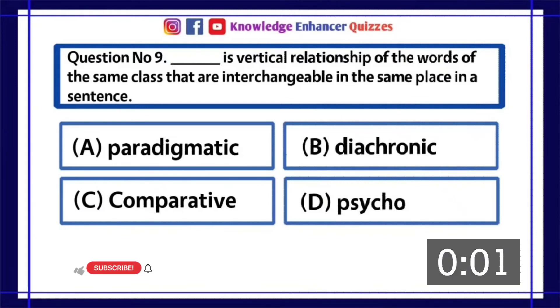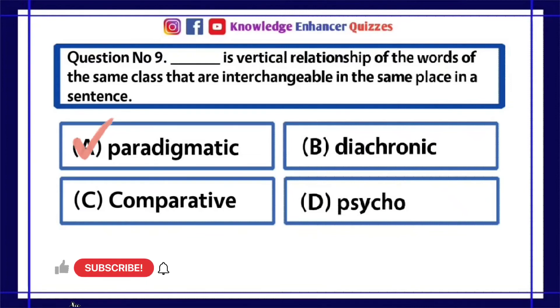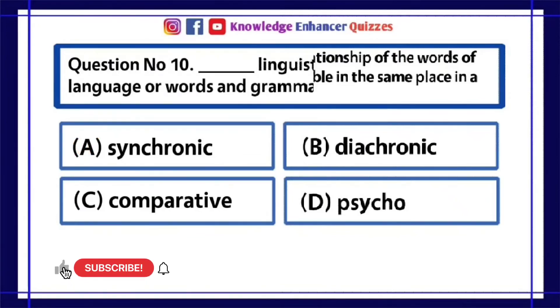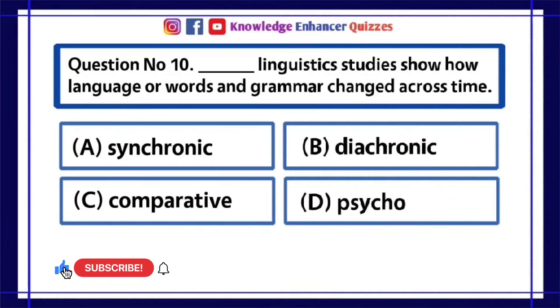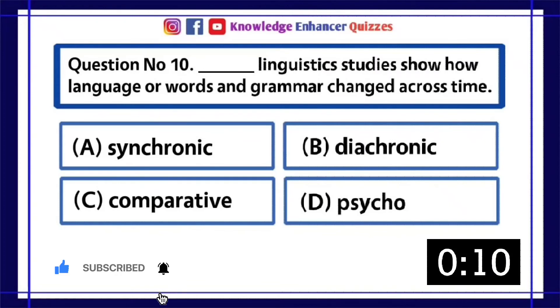Option A is the right answer. Question Number 10: Dash linguistic studies show how language, words, and grammar changed across time. A. Synchronic, B. Diachronic, C. Comparative, D. Psycho.